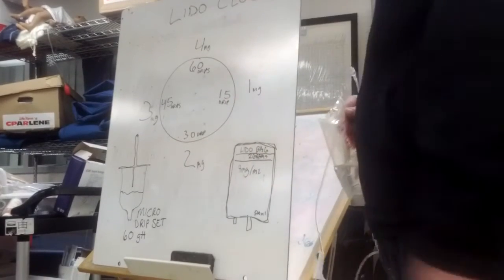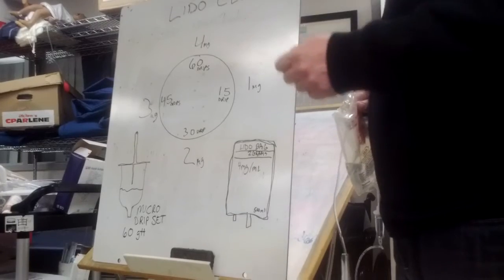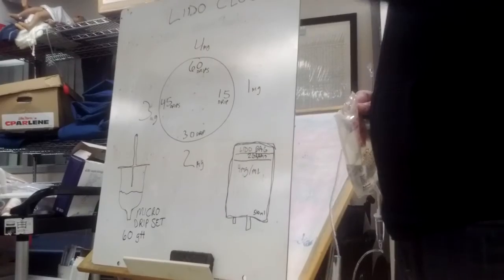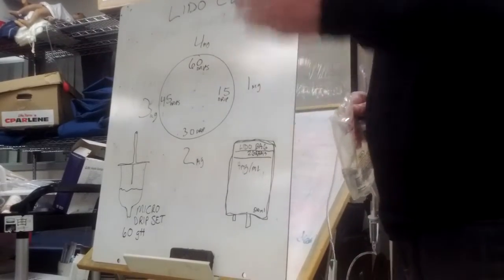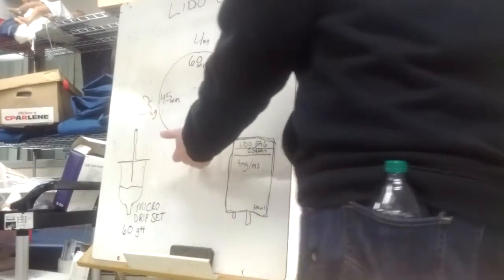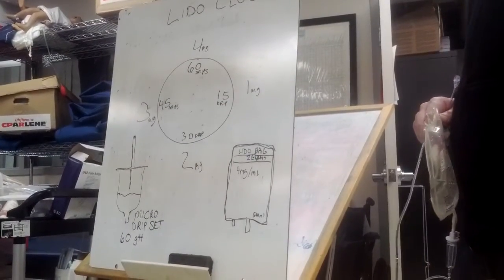You're just gonna make sure it's one drip every how many seconds - one drip every four seconds. If they ordered two milligrams a minute, it's 30 drips - one drip every two seconds.